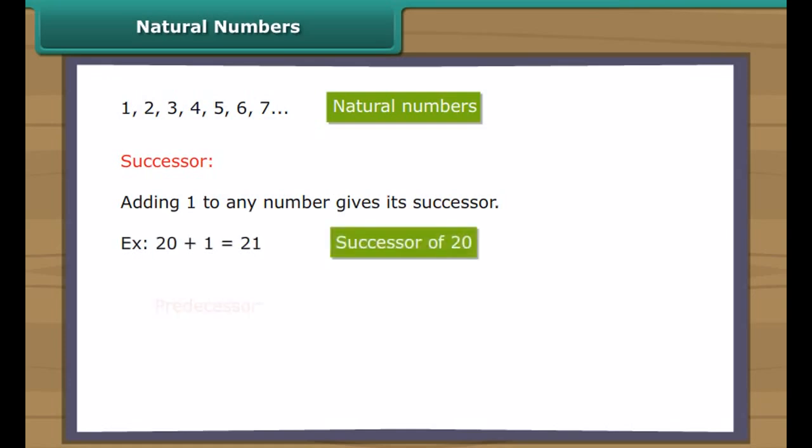Subtracting one from any number gives its predecessor. Example: subtracting one from twenty gives nineteen, which is the predecessor of twenty. Interesting question: what is the largest natural number?